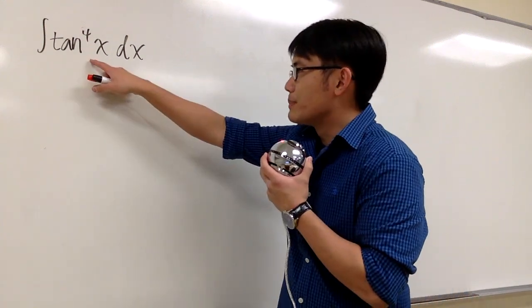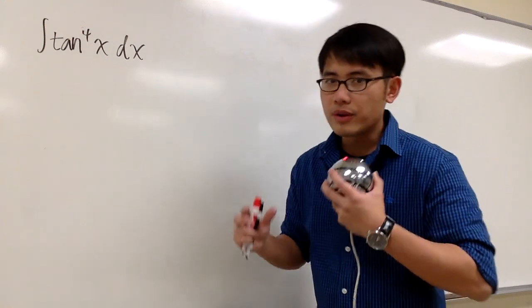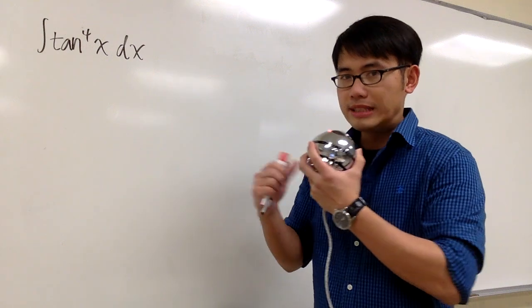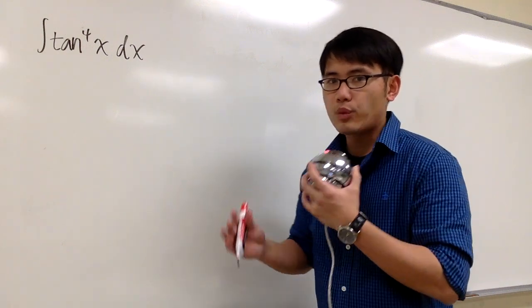We will integrate tangent to the fourth power x. So remember, for the identity that we have, we only can substitute tangent square, and then that will become secant square minus 1.